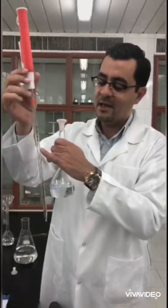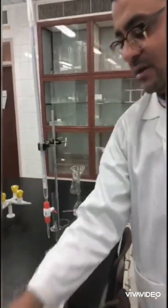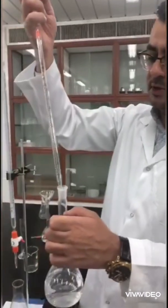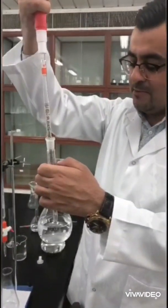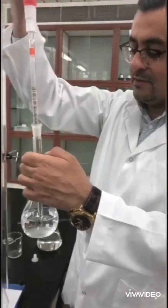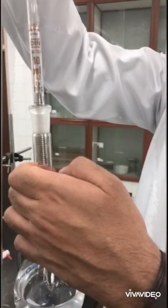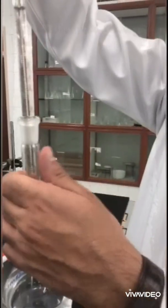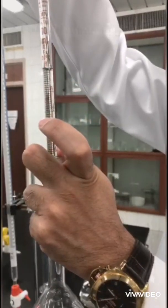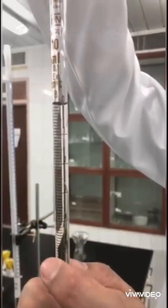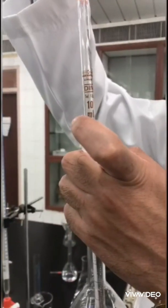I'll take exactly 10 milliliters, then I will start the titration process. Here I am using a 10 milliliters pipette, so I will fill it to zero. You can focus here on the zero division. I don't know if it's clear. Maybe I need one more drop.